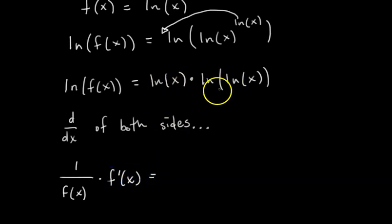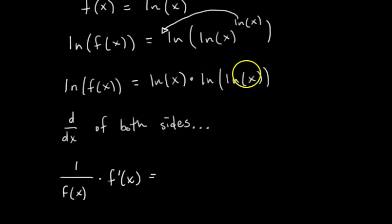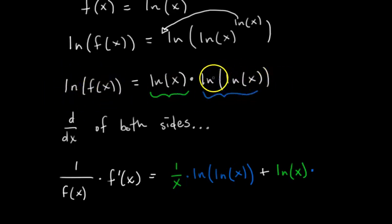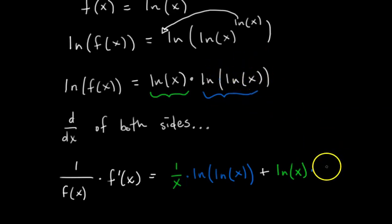Now, what's d/dx of the right side? This is a product of two functions of x, so we apply the product rule: take the left term times the derivative of the right term, plus the right term times the derivative of the left term. At one point we need to take the derivative of the natural log of the natural log of x. The derivative of ln of something is 1 over that something times the derivative of the inside. So the derivative of ln of ln of x is 1 over ln of x, times the derivative of ln of x, which is 1 over x.